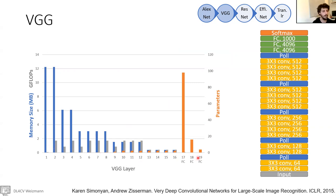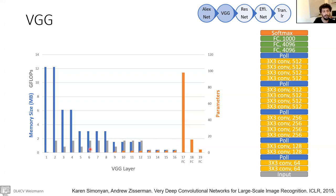We can see this in the following diagram showing all the layers of the VGG network. In blue we see the memory size of the output for each layer — we use a lot of memory, especially in the first layers where we have huge resolution HxW and many channels. In gray, we see the number of floating point operations during our layers, which is quite constant — that's good. In orange, we see the number of parameters for each layer, and we can see that the fully connected layers use a lot of parameters.